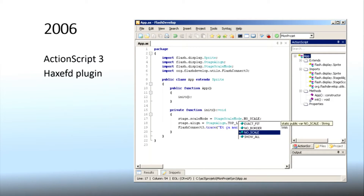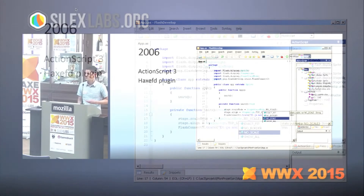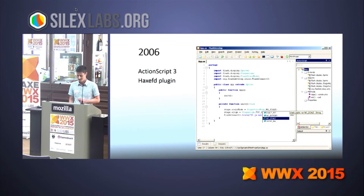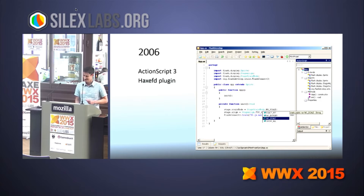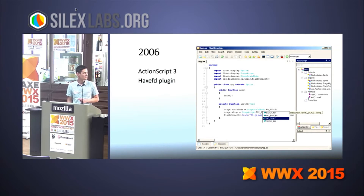The next year, Flash Develop 2 had a project panel and it's starting to look like a proper IDE. And when ActionScript 3 was released, this was the very first public IDE with ActionScript 3 support. It wasn't very good, but it was there. And probably around the same time, Nicolas was working on the Haxe FD plugin to add Haxe to Flash Develop 2.